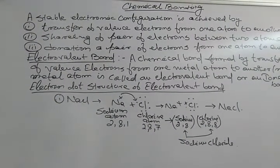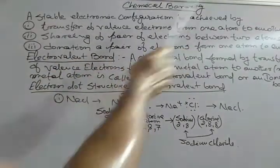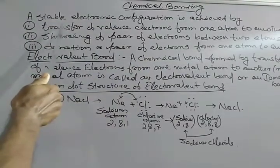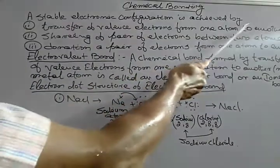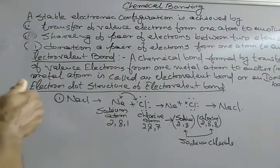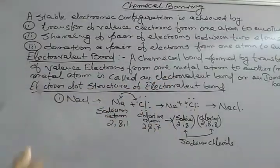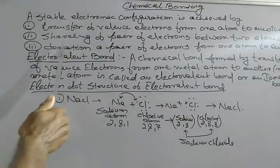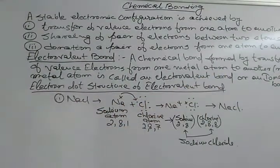Today we will read about chemical bonding in chemistry. A stable electronic configuration is achieved by: number one, transfer of valence electrons from one atom to another; number two, sharing of a pair of electrons between two atoms; number three, donation of a pair of electrons from one atom to another atom.